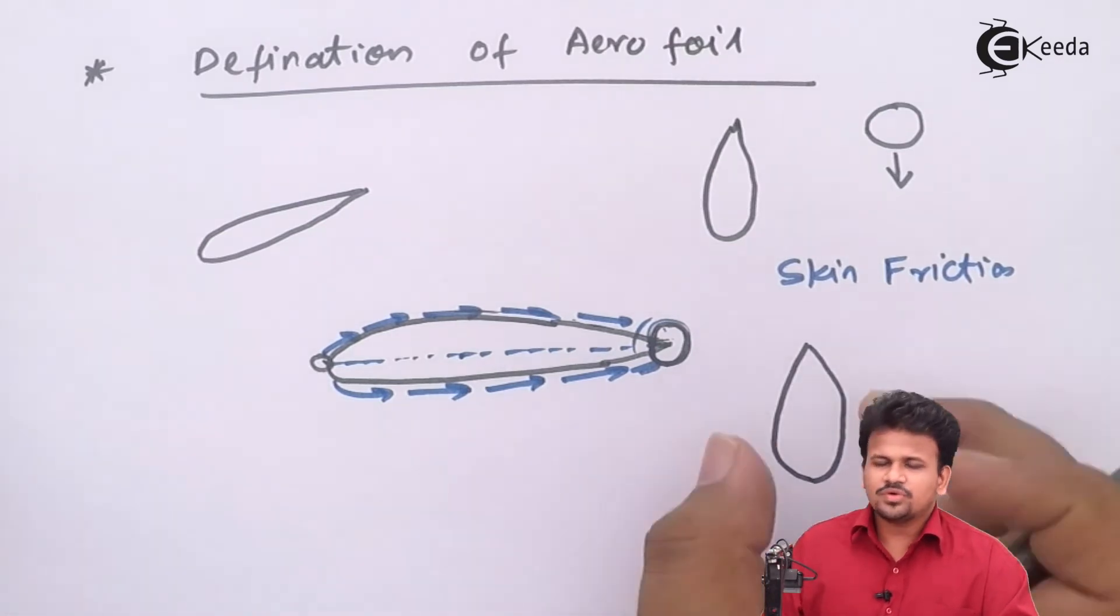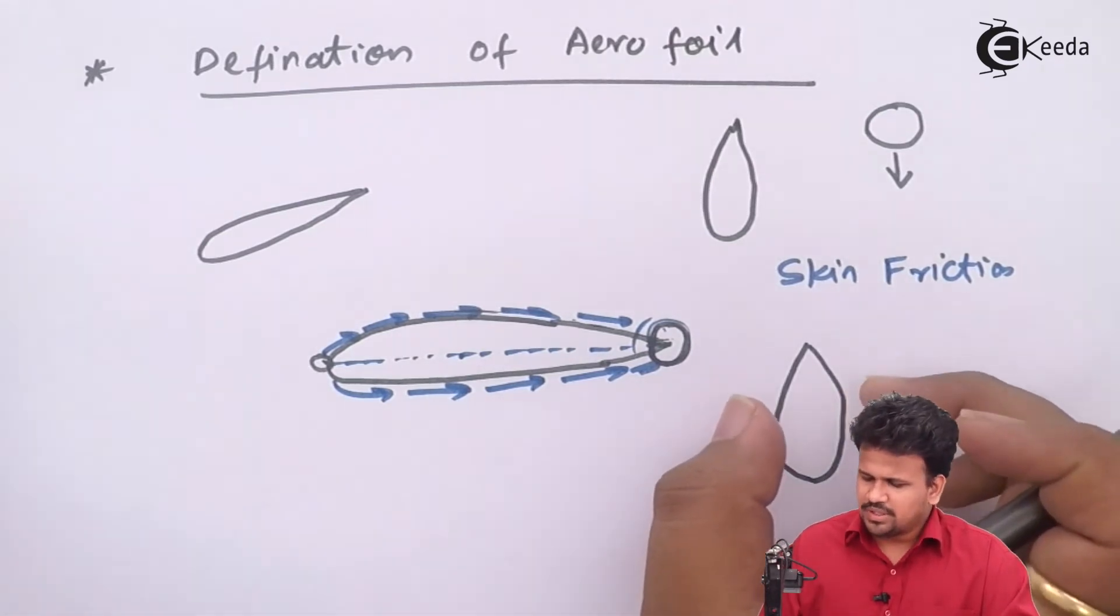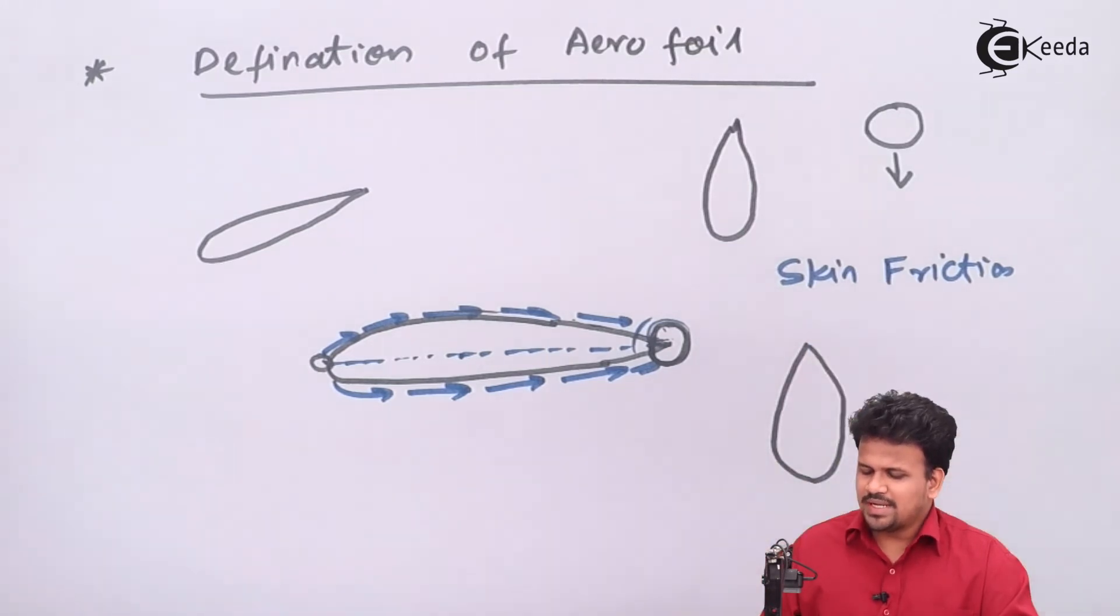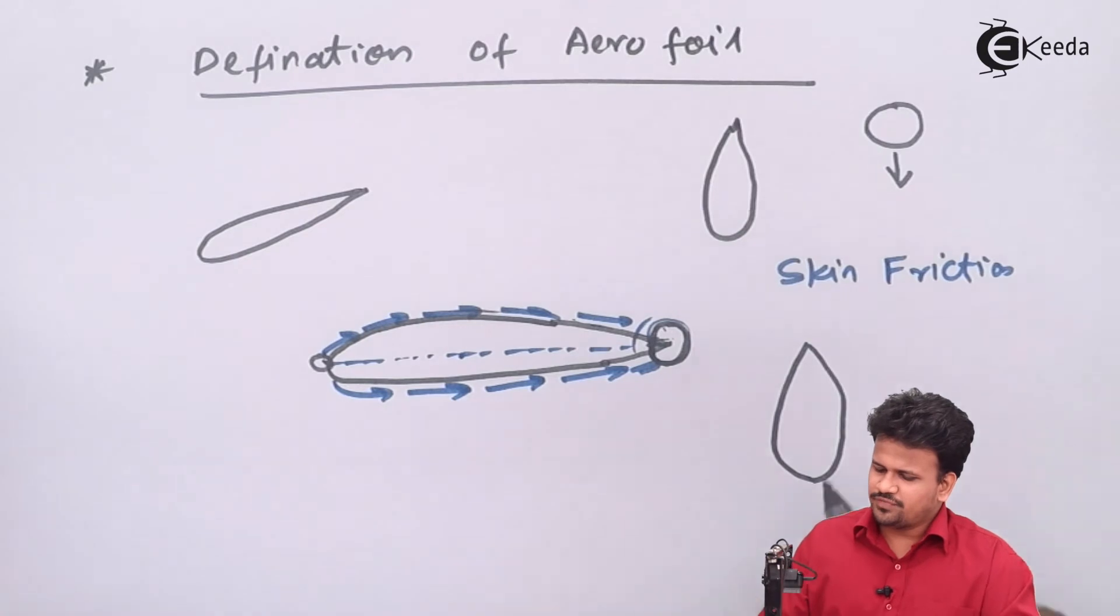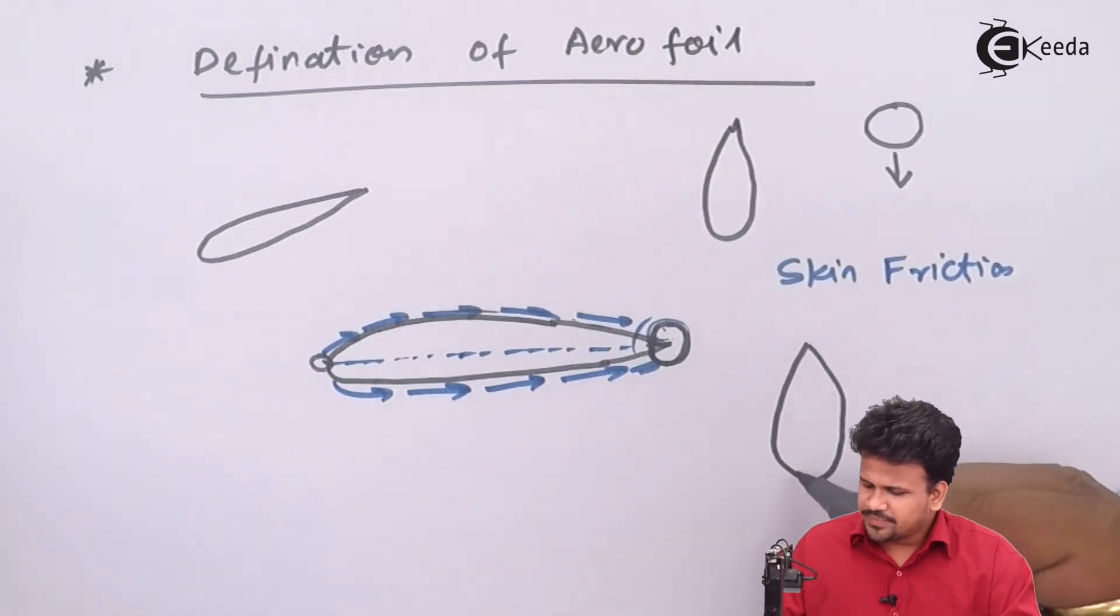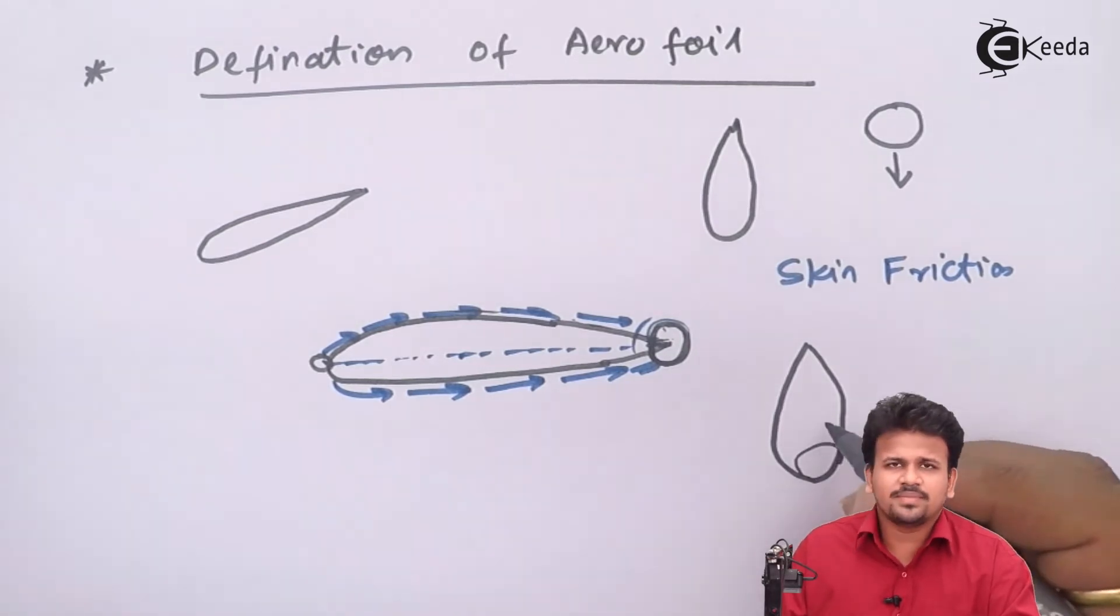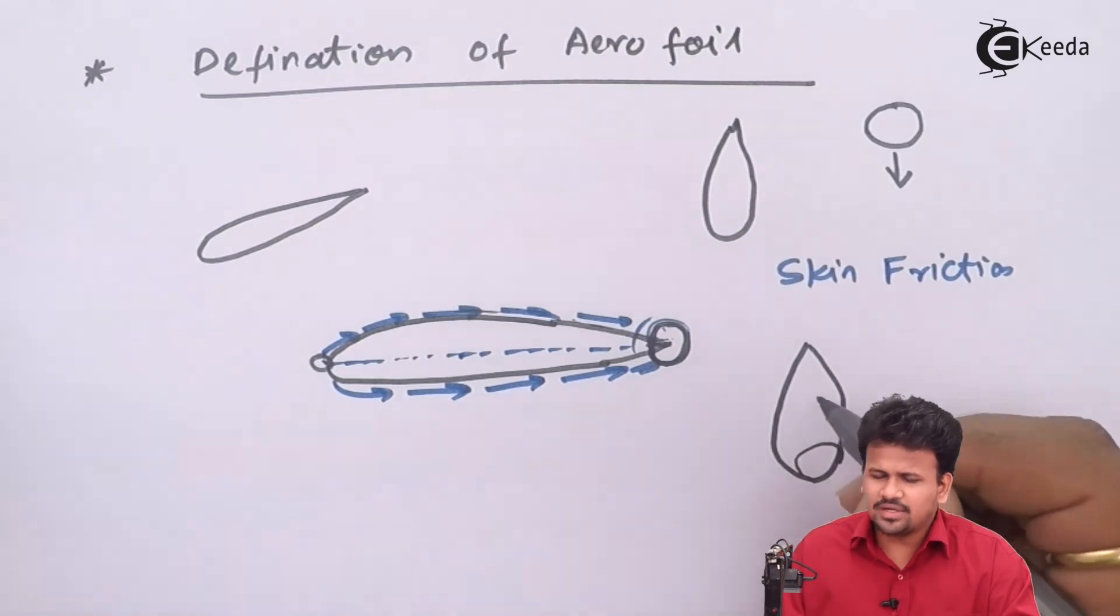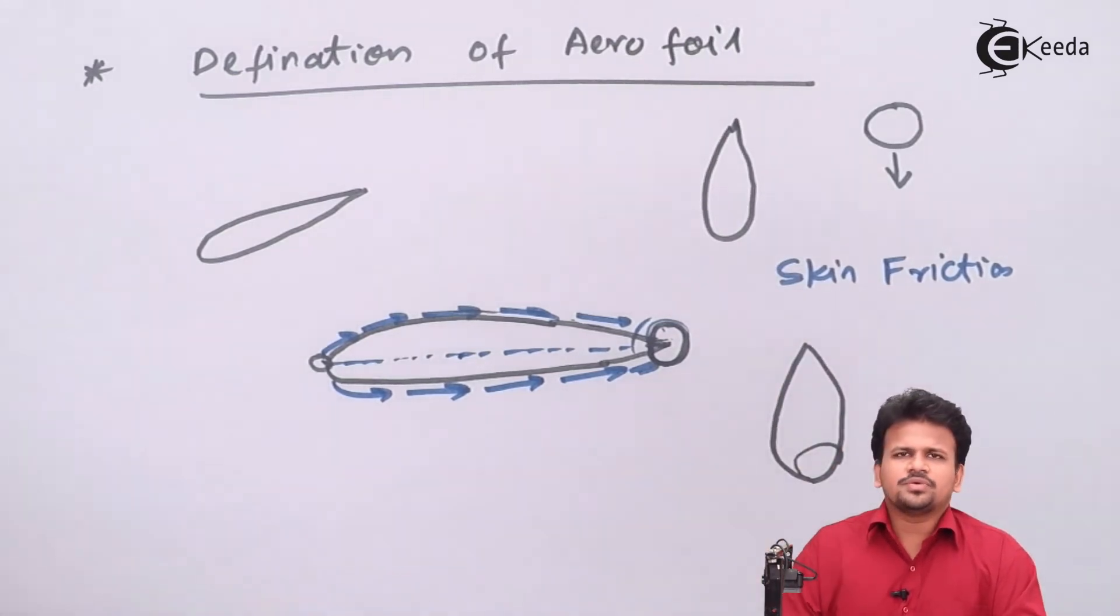This shape of the drop is called an aerofoil shape. If the velocity of the drop increases further, then there will be boundary layer separation and wake formation inside the drop, and this entire drop splits up into n number of droplets.